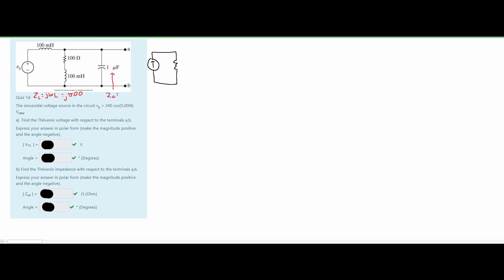For a capacitor it's a little different: Z_C = −j/(ωC). With ω = 5000 and C = 1 μF (10⁻⁶), we get Z_C = −j200. We can now plug these values in — the inductor becomes j500, and combining the resistor with that impedance gives us 100 + j500.